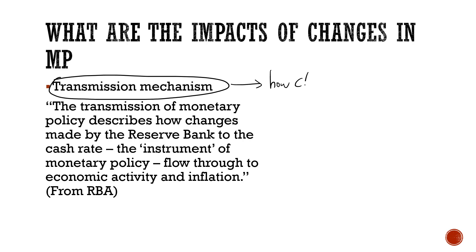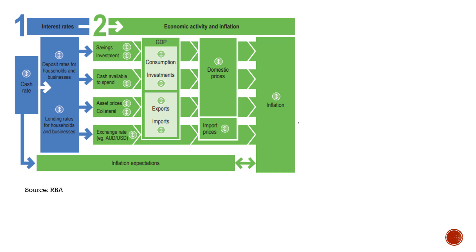Basically, this is what we're talking about. In terms of how the transmission mechanism works, the RBA has a great diagram — there'll be a link in the show notes — that talks about how changes in the cash rate work all the way through the economy. You can see it will affect deposit rates, savings, investments, cash, asset prices, exchange rates, GDP, domestic prices, import prices, inflation, expectations, and inflation. We're going to work through some of these, and there's a worksheet in the show notes so you can walk through how the change in the cash rate will then affect all these other elements in the economy.